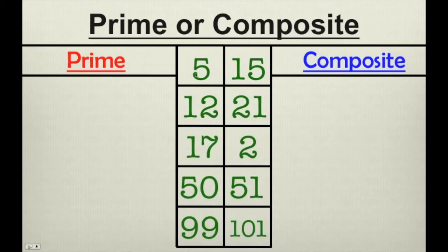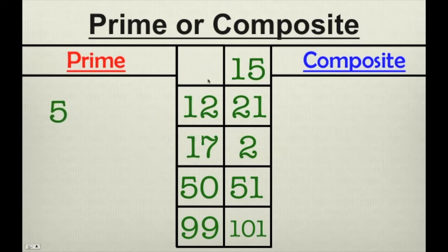Let's start with the number 5. Do you think 5 is prime or composite? 5 is prime because it only has 2 factors, 1 and 5. How about 15?